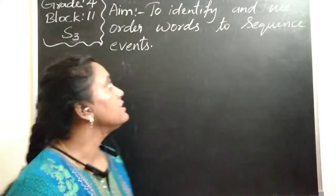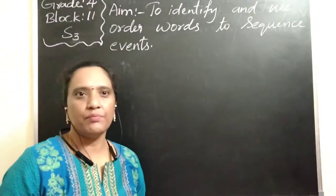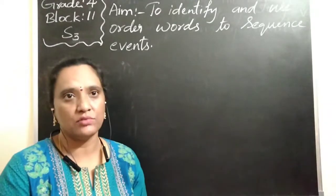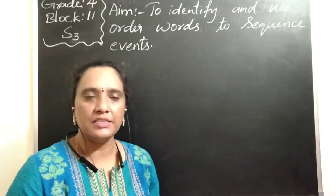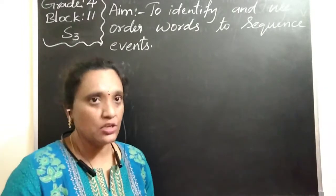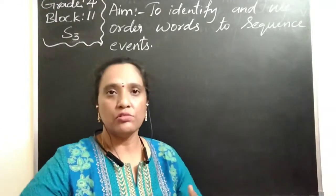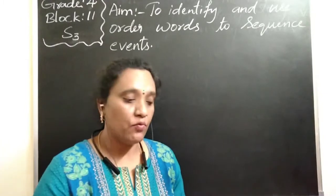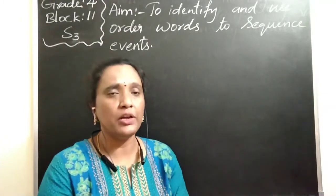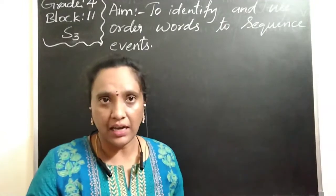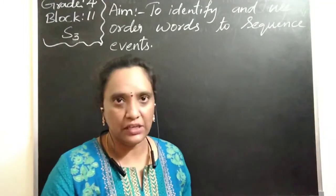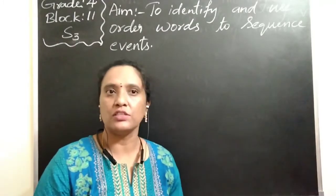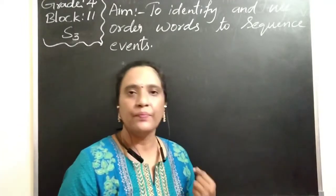You already learned about order words in previous classes, but we are going to review them again because we want to be able to identify them. Identifying means when you read a story, you must pick out the correct words. For example, if I ask you to identify the nouns, you read the story and find names, places, things, and animal names — picking up the correct ones. In the same way, we want to identify the order words.